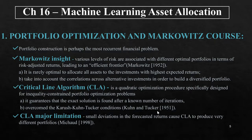Starting with the problem of convex portfolio optimization and Markowitz scores. In this book the topics are separated, but I consider they complement each other, so they will be presented together. Portfolio construction is perhaps the most recurrent financial problem. Markowitz's monumental insight was to recognize that various levels of risk are associated with different optimal portfolios in terms of risk-adjusted returns, leading to the notion of the efficient frontier. One implication is that it is not optimal to allocate all assets to the investments with highest expected returns; instead, we should take into account the correlations across alternative investments to build a diversified portfolio. Having this, he developed the critical line algorithm.